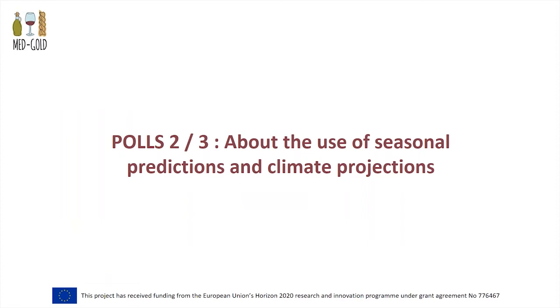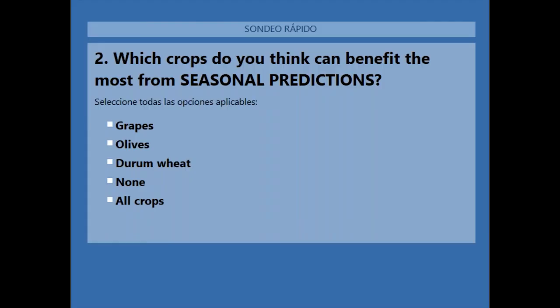Thank you Antonio, Valentina and Javier for your presentations. Now that you have seen the different types of forecasts and the applications they have to different agriculture fields, before moving to the round of questions, we will run a poll. The first question is: which crops do you think can benefit the most from seasonal predictions? Remember that seasonal predictions are predictions for the next months and seasons. You have several options — you can select more than one if you want: grapes, olives, durum wheat, none, or all crops. Please participate and we will check the results together.